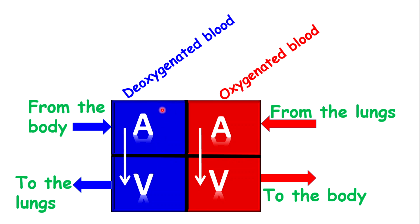The heart is described as a double pump. It's called a double pump because it has two different sides and the blood on one side does not mix with the other. The heart pumps deoxygenated blood and oxygenated blood at the same time without them being mixed. It is therefore known as a double pump.